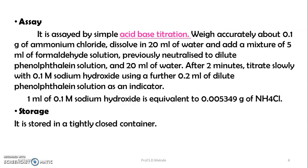The assay of ammonium chloride is based on acid-base titration. Weigh accurately about 1 gram of ammonium chloride and dissolve it in 20 ml of water. Add a mixture of 5 ml of formaldehyde solution, previously neutralized to dilute phenolphthalein solution, and 20 ml of water. After 2 minutes, titrate slowly with 0.1 mol sodium hydroxide using 0.2 ml of dilute phenolphthalein solution as indicator. 1 ml of 0.1 mol sodium hydroxide is equivalent to 0.05349 gram of ammonium chloride.